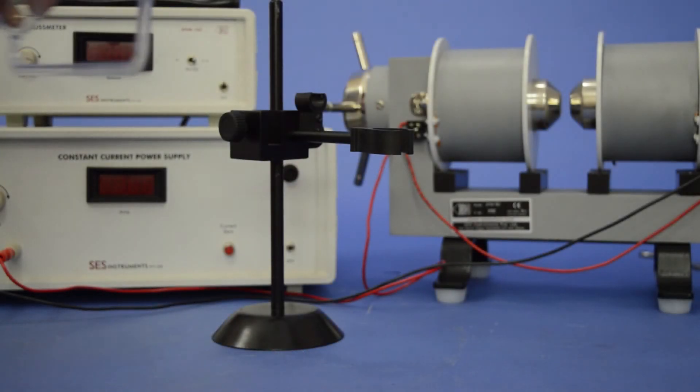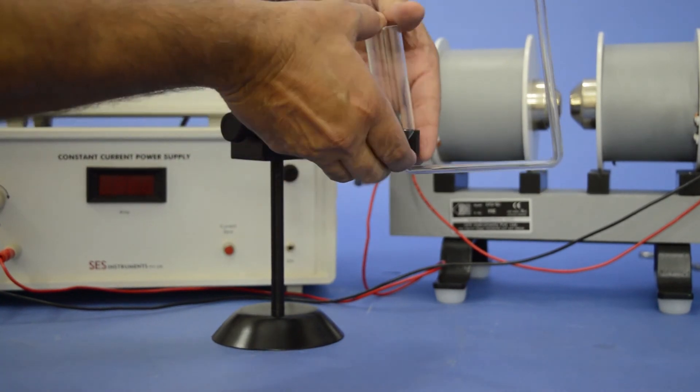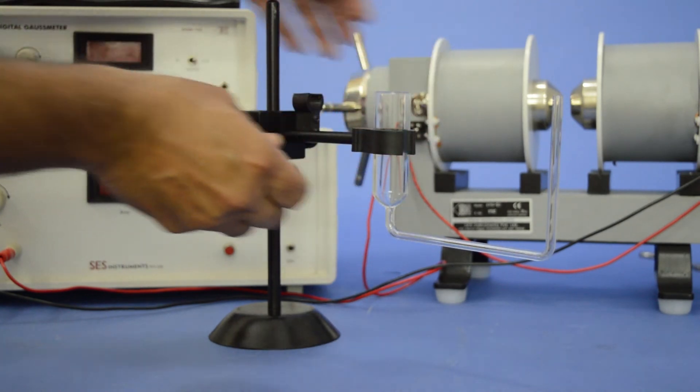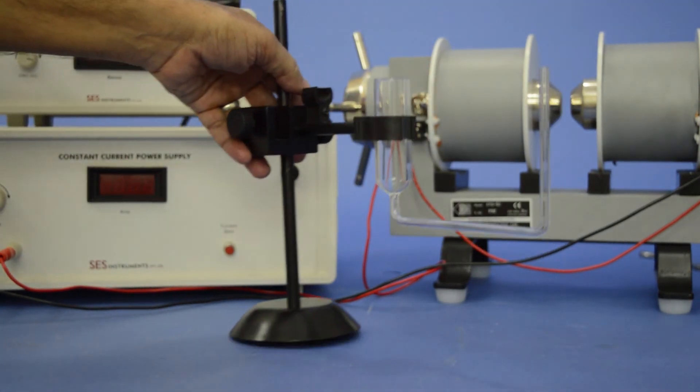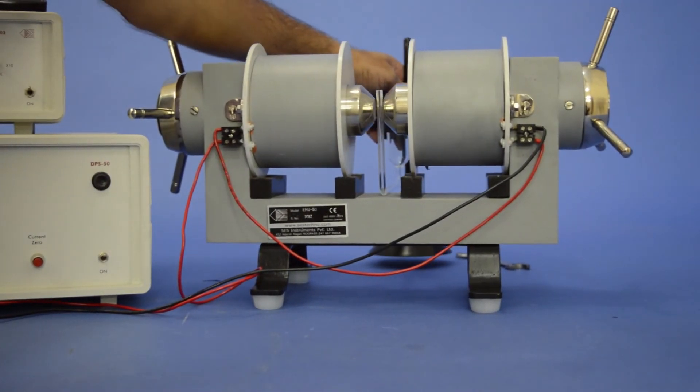Fix the Kuhn's tube in its stand and place it within the pre-adjusted space of the magnet.